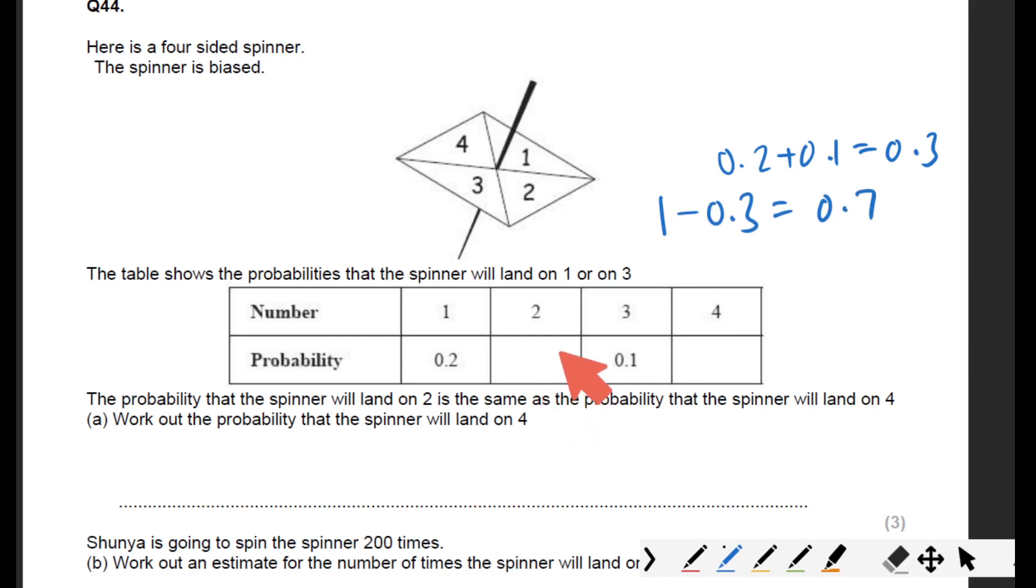You cannot put 0.7 and 0.7 there because if you did that, all together that'd be more than one. Whatever goes here will be the same as this, but these two together add up to 0.7. Because they're the same, we're going to split the 0.7, we're going to half the 0.7.